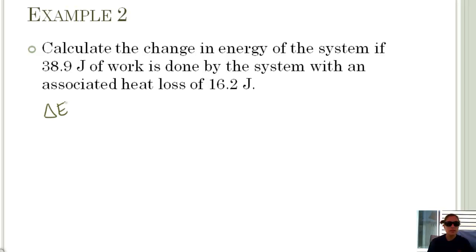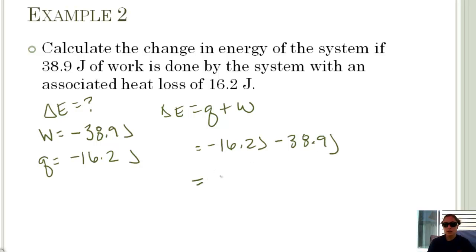Calculate the change in energy of a system if 38.9 joules of work is done by the system, so that's negative. Everything is in terms of the system. With an associated heat loss of 16.2 joules, so Q, if it's losing heat, that is negative. Remember we talked about exothermic, endothermic. We know delta E is equal to Q plus W. So my Q is negative 16.2 joules plus a negative 38.9 joules. It's negative 55.1 joules, and I have three significant figures. So this is my delta E.